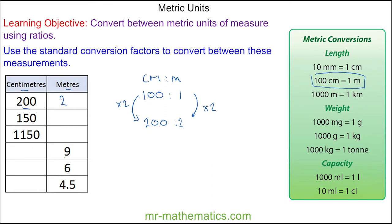We can convert 9 metres into centimetres by multiplying 1 by 9. And we do 100 times 9. And we get 900. So 900 centimetres is the same as 9 metres.